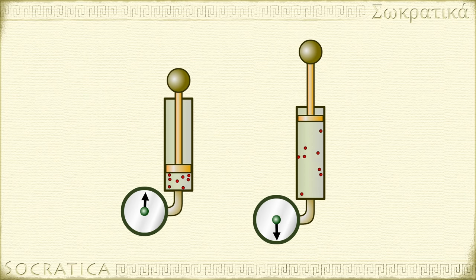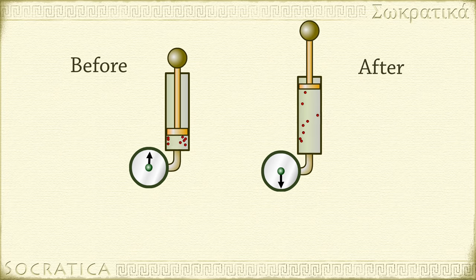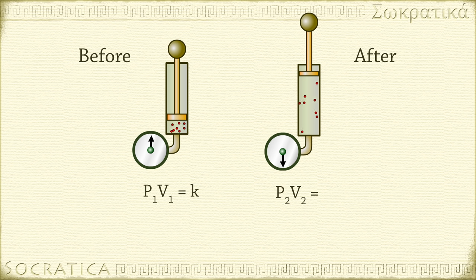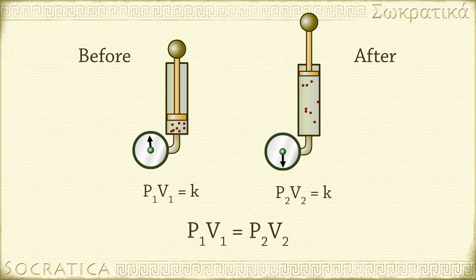Very often, Boyle's law is used to compare two situations — a before and an after. In that case, you can say P1V1 equals K and P2V2 equals K. So you can write Boyle's law as P1V1 equals P2V2.